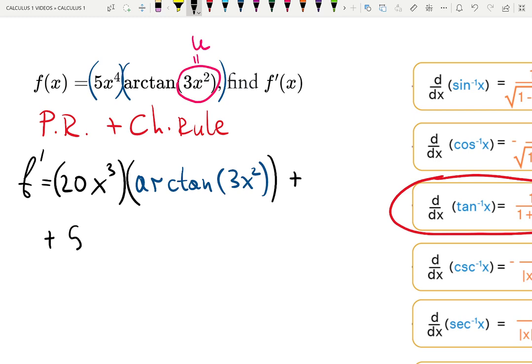Plus, copy 5x to the 4 times differentiate arctangent. And now the fun part starts. As I mentioned already, derivative of arctangent is 1 over 1 plus input squared. So you take this input over here and copy it, and then we square it later.